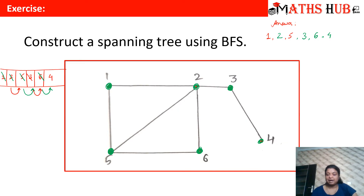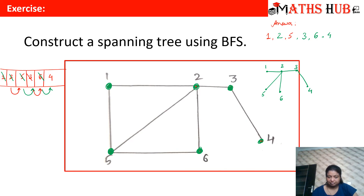So what is the spanning tree that we get? We move from 1 to 2, then from 2 to vertex 5, then 2 to vertex 3, then 2 to vertex 6, and then we travel to vertex 3 to vertex 4. So this is the spanning tree that we have.